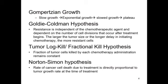The Goldie-Coldman hypothesis says resistance is independent of the chemotherapeutic agent and depends on the number of cell divisions. So the larger the tumor size and the longer the delay in initiating chemotherapy, the more likely you are to have resistant cells. The tumor log-kill or fractional kill hypothesis says that a certain percentage of cells is killed by each chemotherapy administration, which remains constant — so you may kill 90% of cells, then 90% of the remaining cells the next cycle, requiring multiple courses to eradicate the tumor. The Norton-Simon hypothesis says the rate of cancer cell death is directly proportional to tumor growth rate at the time of treatment.